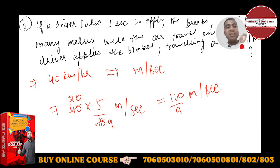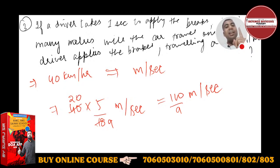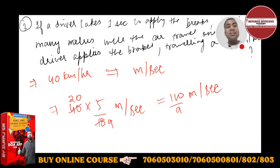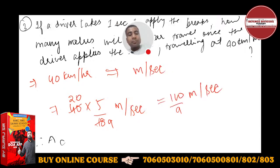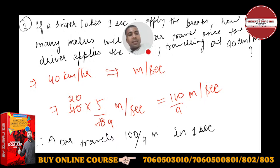यह speed हमें क्या बताती है? 100 by 9 meter per second का मतलब — जैसे 40 km per hour का मतलब है गाड़ी एक घंटे में 40 km travel कर रही है — उसी तरह 100 by 9 meter per second का मतलब है गाड़ी 100 by 9 meters travel करती है one second में। Therefore, a car travels 100 by 9 meters in one second।